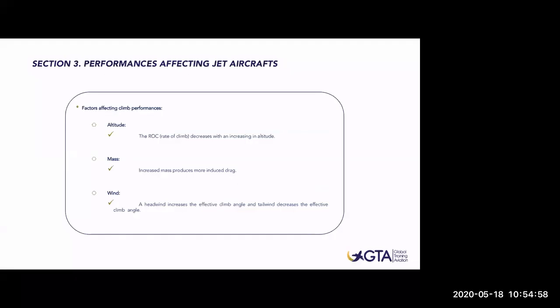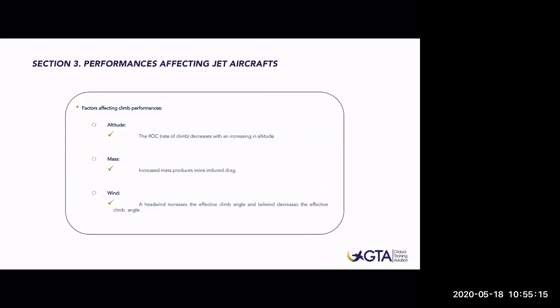Factors affecting climb performance: Altitude — rate of climb decreases with increasing altitude. Mass — increased mass produces more induced drag. Wind — a headwind increases the effective climb angle; a tailwind decreases it. Temperature — high temperature means decreased air density, reducing lift and especially reducing jet engine thrust. Flaps position — flaps increase both lift and drag; while increased lift does not influence climb performance, increased drag does — so use of flaps reduces climb performance, as discussed in the previous slides.